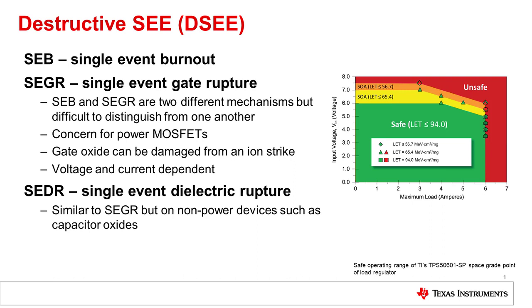Single event burnout and single event gate rupture are effects on power MOSFETs. These two mechanisms are sometimes very hard to distinguish from one another. What ends up happening is the gate oxide gets destroyed from the ion strike, and the susceptibility to burnout and gate rupture are voltage and current dependent.